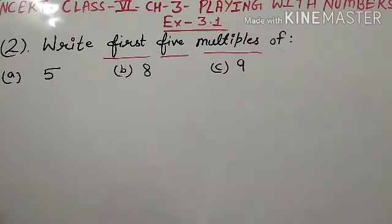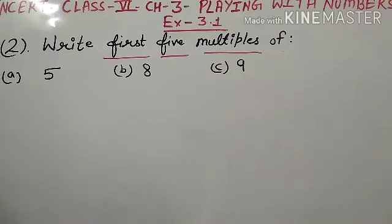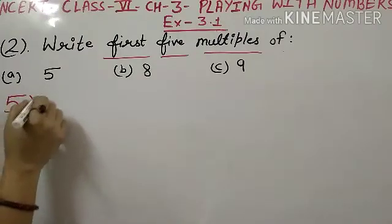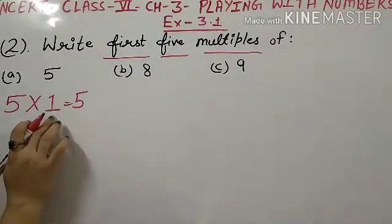First 5 multiples means first 5 numbers. So, you have to write 5. How do you write? 5 multiplied by 1. This is the first multiple.